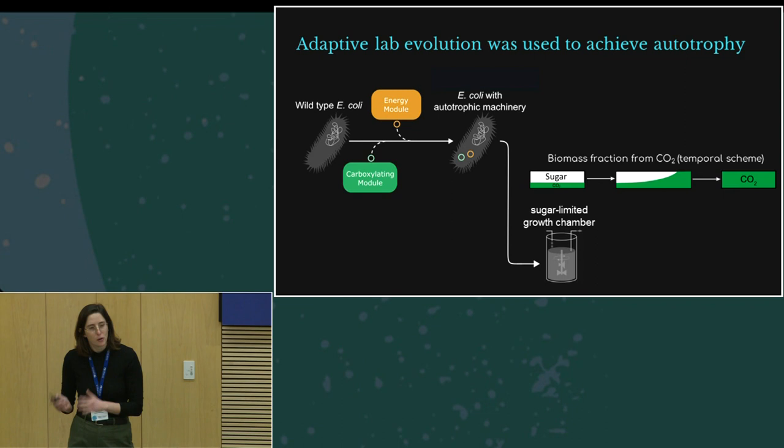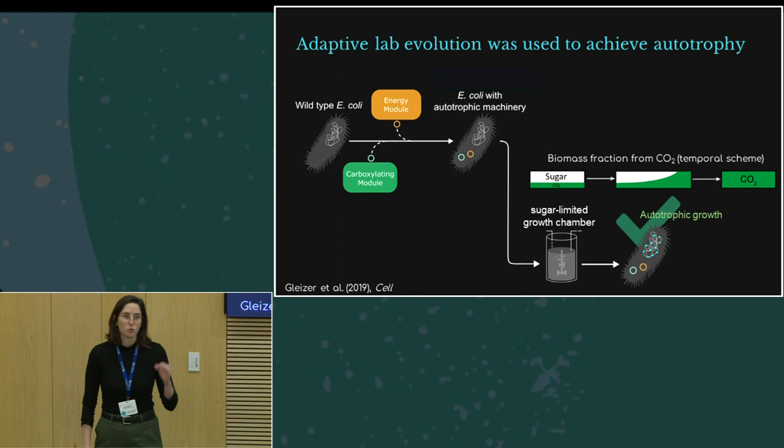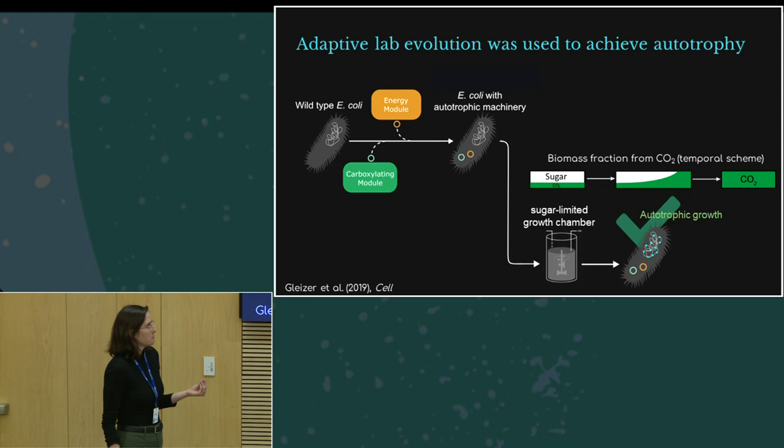And after a lot of trial and error and many, many months of evolution, we finally did it. We got an E. coli that can grow on carbon dioxide as a sole carbon source—an autotrophic E. coli. Wow, we were so happy. What a great scientific achievement. And we were really eager to use it and learn from it, but we still had the dream.